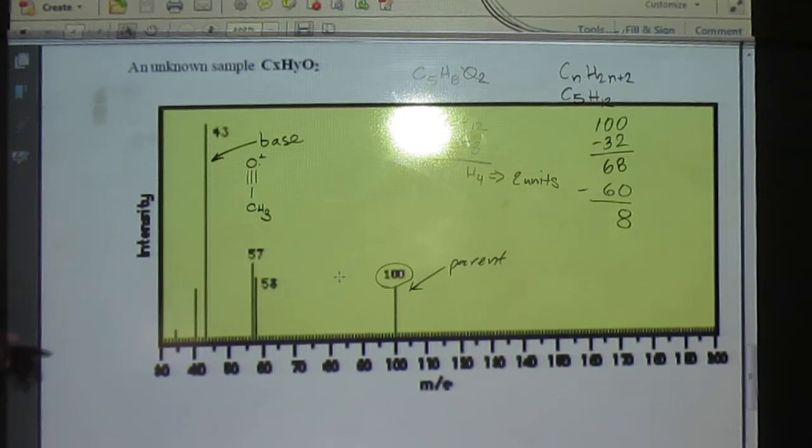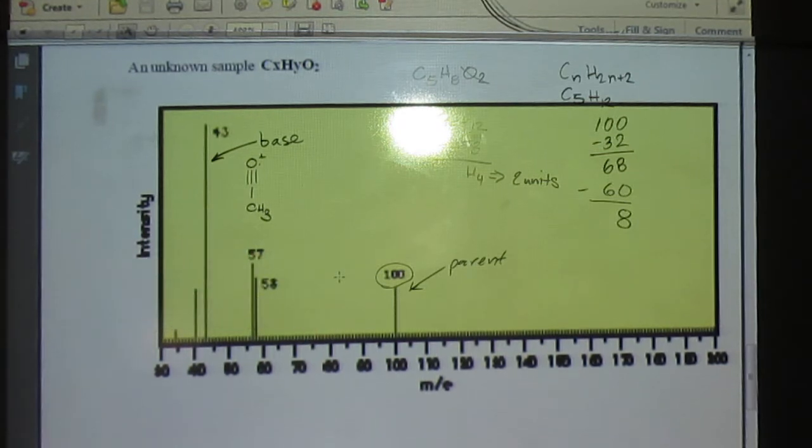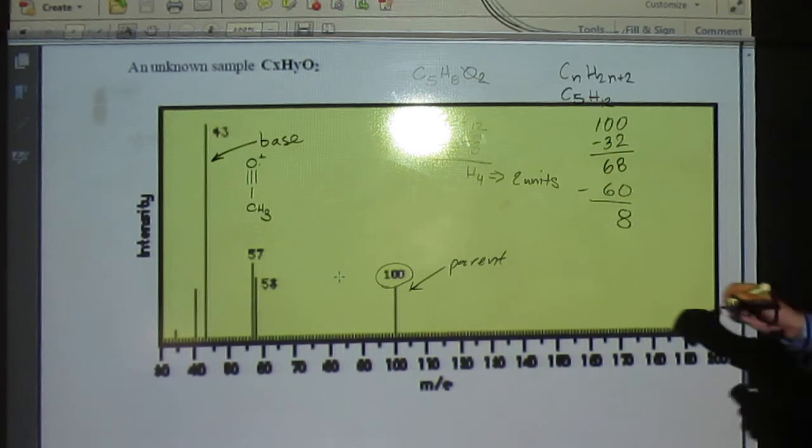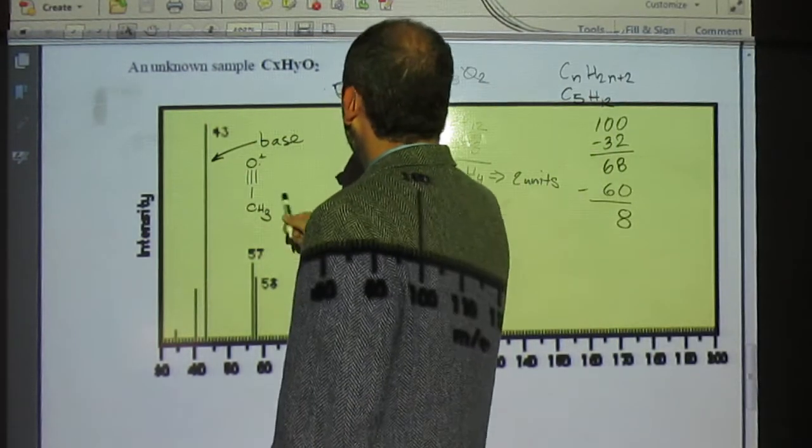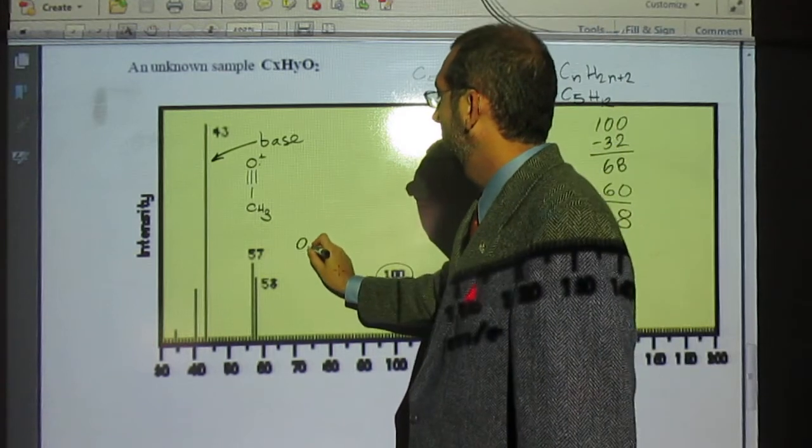And the rest 57. 57 plus 43 equals 100. So from there we should be able to just come up with something that has the mass of 57. The other oxygen is in there. There's going to be an oxygen, and there's one, two carbons in this one. So we have five. How many carbons are left over? Three.